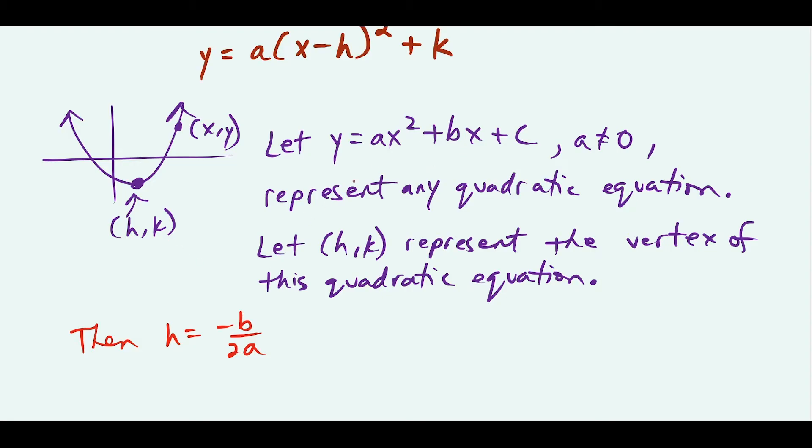We look at the b value, the a value, and we use the formula negative b over 2a. So if h is equal to this, we can say this is true.